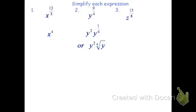Now try that same thing with number 3 — we've got z raised to the 15 over 8. 8 will not go into 15 evenly, but it does go in one time, so I can say that's z to the 1, or just z, with something left over. I'll still have 7 left over, so I get z times z to the 7 eighths. z to the 7 eighths can be rewritten as a radical — the index would be 8, and it's going to be the 8th root of z to the 7th. So we can rewrite this as z times the 8th root of z to the 7th. Either form — z times z to the 7 eighths, or z times the 8th root of z to the 7 — is correct.